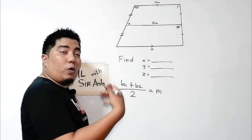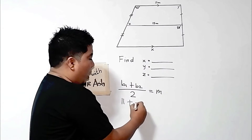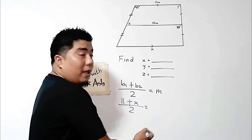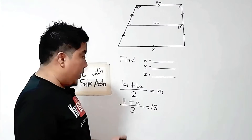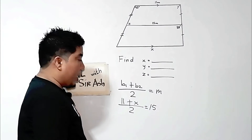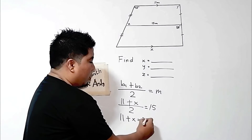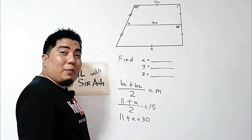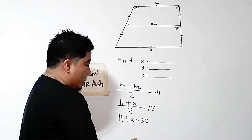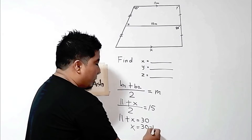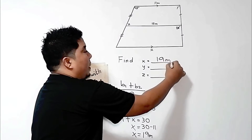Now let us substitute our given. Our base 1 is 11 meters, plus our base 2, that is x, over 2, is equal to our median which is 15 meters. Applying cross multiplication, we multiply 2 by 15 so that 11 plus x equals 30. We then transpose 11 to the right side: x equals 30 minus 11, and our final answer is 19 meters. So therefore, the value of x is 19 meters.